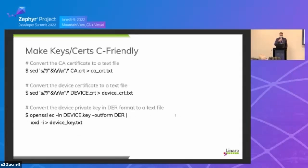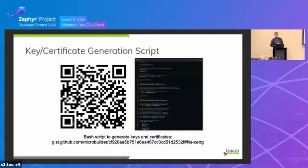None of this matches what a typical provisioning workflow would look like with real devices, but just to demonstrate how this might work in Zephyr, we can take those certificate outputs and convert them into something more C-friendly that we can embed in our demo. We'll get three text files: the CA certificate, the device certificate, and the device private key. Those are the three pieces of information needed on our Zephyr-based client devices to make this work. If you want a simple bash script that generates all of these certificates including C-friendly output, scan the QR code — that bash script will generate all those artifacts for you.